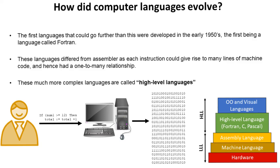The first language that could go further than this were developed in the early 1950s, the first of those being called Fortran. These languages differed from assembler as each instruction could give rise to many lines of machine code. So now we had a one-to-many relationship. These much more complex languages are called high-level languages.